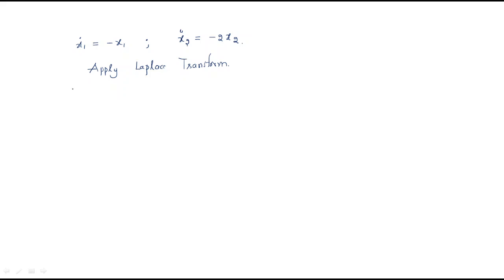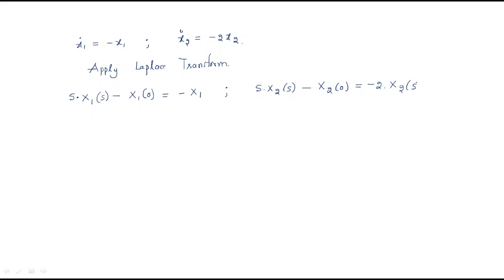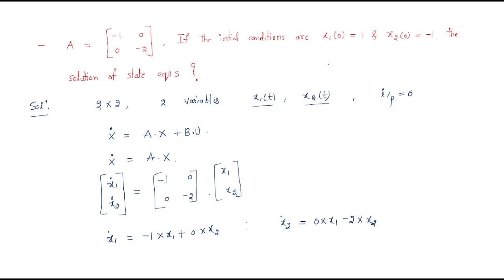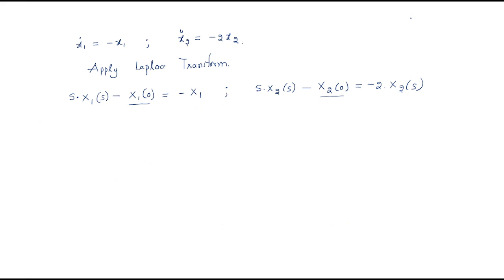Applying the Laplace transform: dx1/dt becomes s·X1(s) minus the initial condition x1(0), equal to -X1(s). For the second equation, dx2/dt becomes s·X2(s) minus x2(0), equal to -2·X2(s). We know x1(0) = 1 and x2(0) = -1.